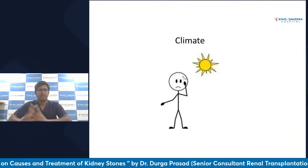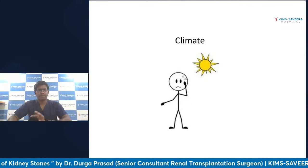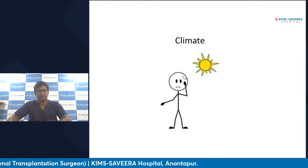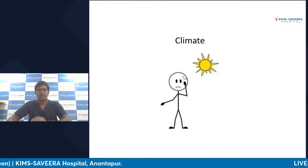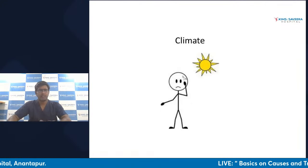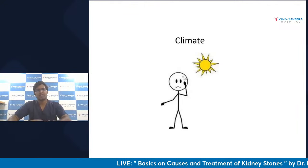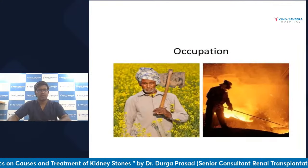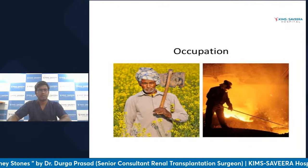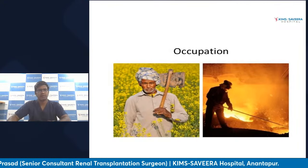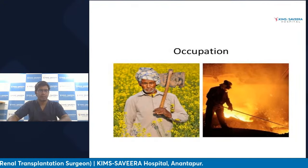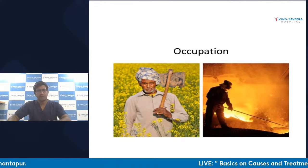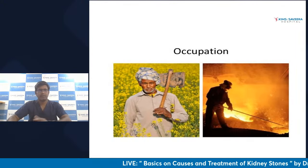The most important factor in our area is climate. With very high temperatures, people who work hard throughout the day have high chances of water loss, which will precipitate urinary stones. People who work in very hot conditions — like police, armed forces, farmers, and those working in coal factories — are very prone. In our day-to-day experience, 75–80% of stone patients are hard-working people, mainly farmers.